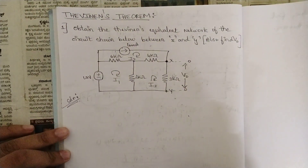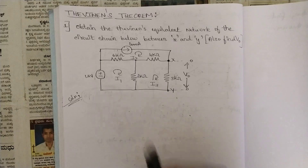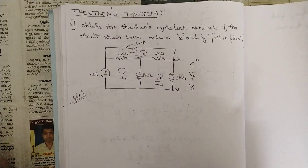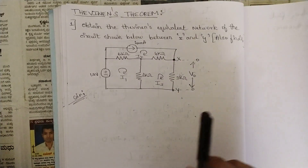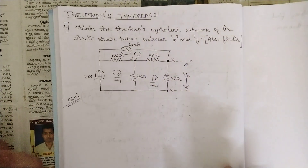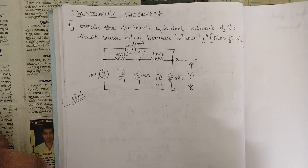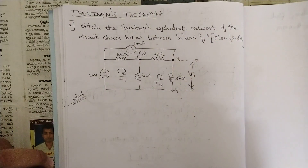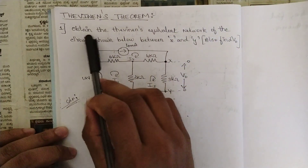Hello everyone, welcome to this new video. In our previous videos we started with the concept called Thevenin's theorem — we discussed the statement, proof, and the steps involved. We should find the Thevenin voltage along with the equivalent impedance to write the equivalent Thevenin network. If you haven't watched those videos, including the one on superposition, please watch them first. Without wasting much time, let's solve the problems.